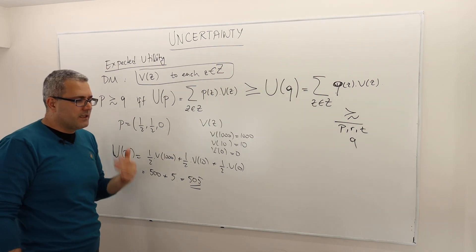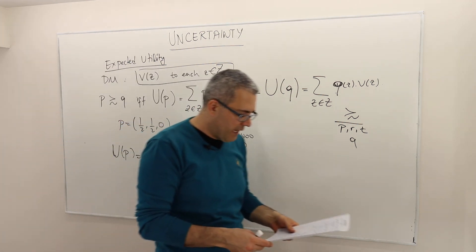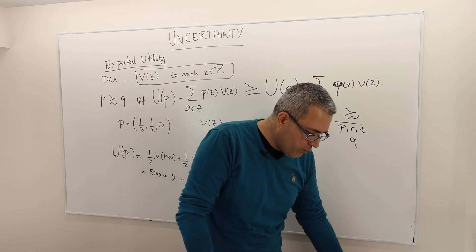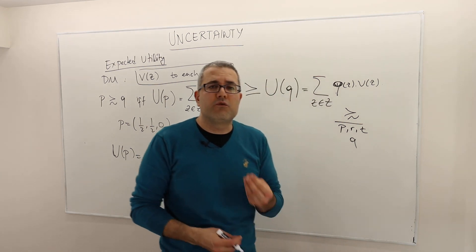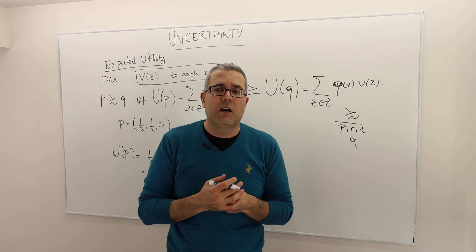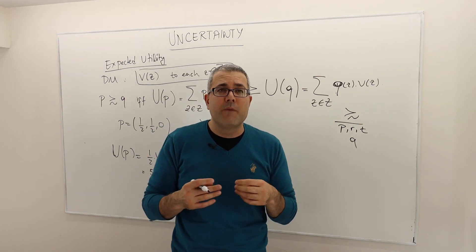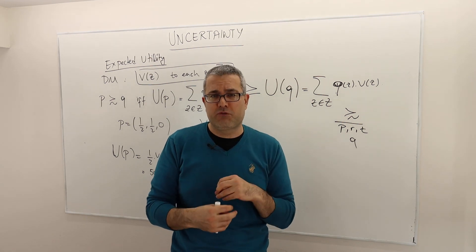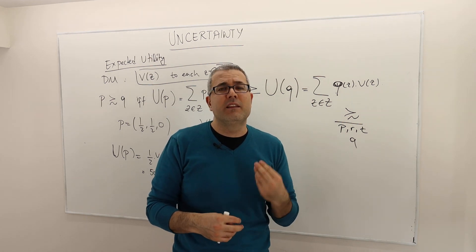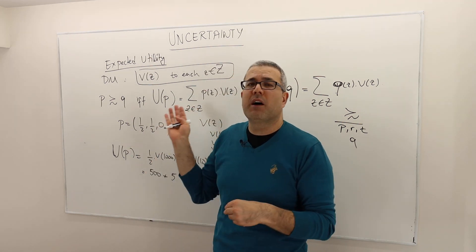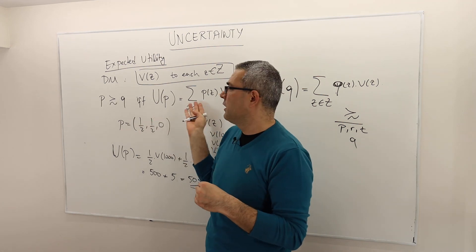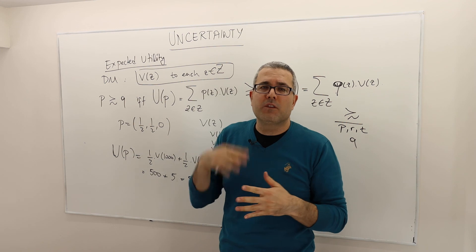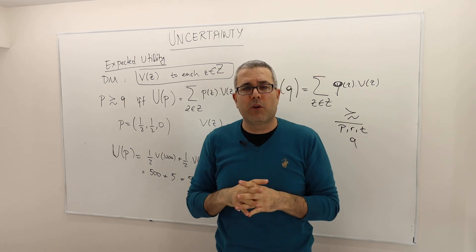That's how the expected utility decision maker behaves. In fact, what we will do next is sort of rationalize this expected utility — that is, when can a decision maker's preference relation actually be represented by this utility function? Is it possible, and if so, when? So this is what we're going to talk about next.